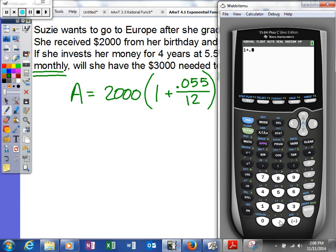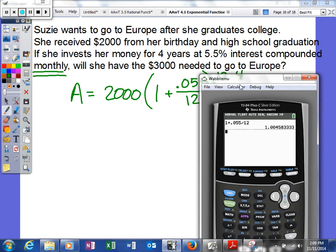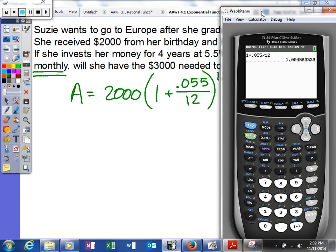So 1 plus decimal 0.055, divided by 12. So your calculator will do order of operations. So it'll do the division first, and you can see it gives us this.